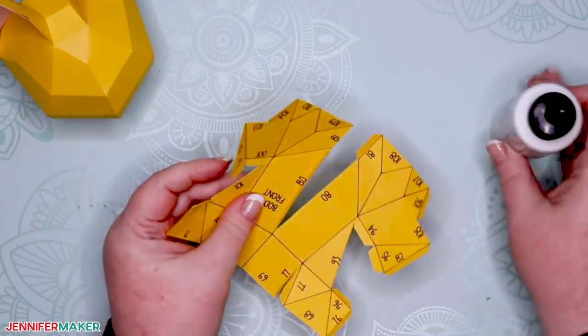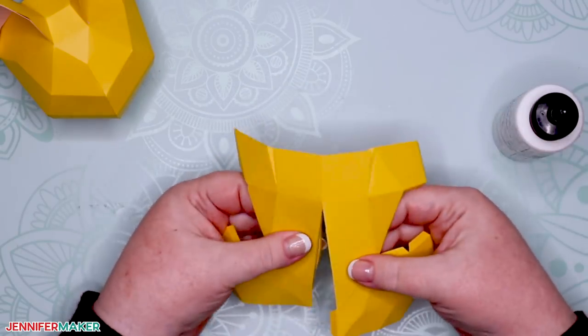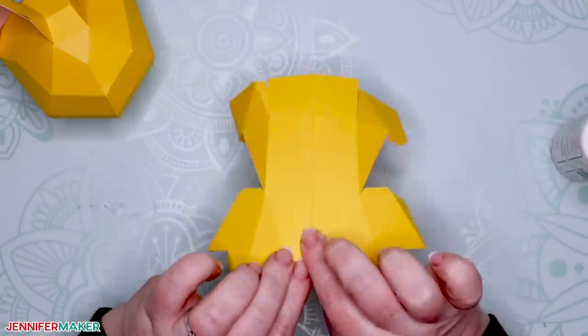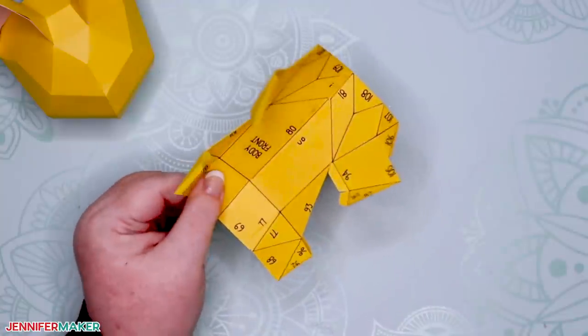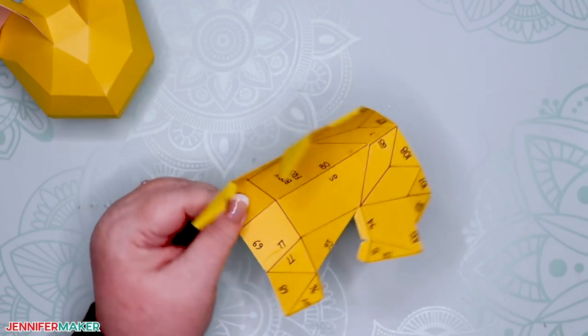Start with tab number 80 and begin gluing it together, remembering to match tabs to sides as you go. When you're all done, this is what the body front piece looks like. Pretty cool, huh? It doesn't really look like much, but this is the front of our cat.